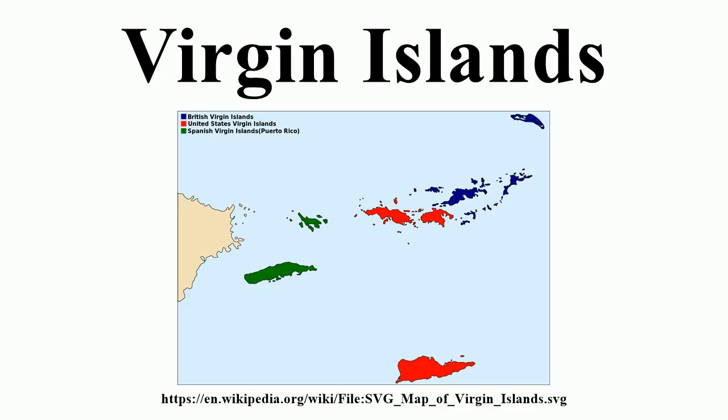The British Virgin Islands is an overseas territory of the United Kingdom comprising approximately 60 islands and cays, including Tortola, Virgin Gorda, Jost Van Dyke, and Anegada.